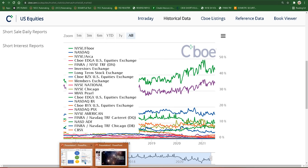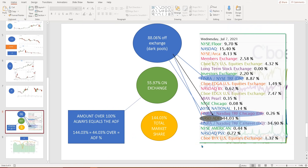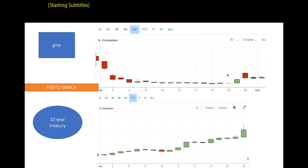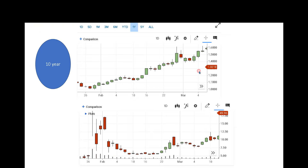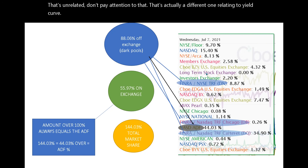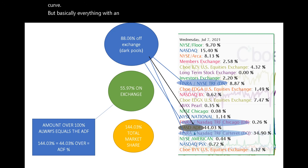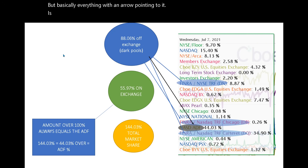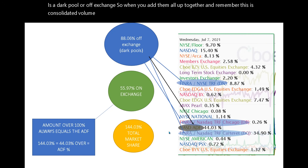Let's take a look at what I'm talking about. I'm going to zoom in so everyone can see it. There's an unrelated chart there — don't pay attention to that, that's actually a different one relating to yield curve. But basically, everything with an arrow pointing to it is a dark pool or off-exchange. When you add them all up together — and remember, this is consolidated volume across the entire market for all lit and unlit exchanges.